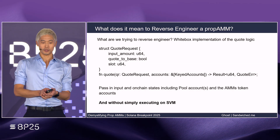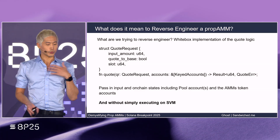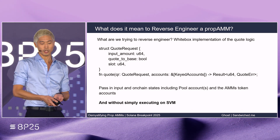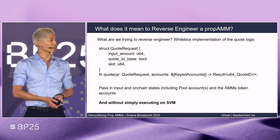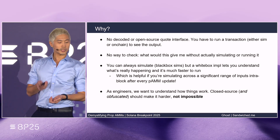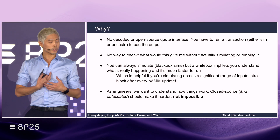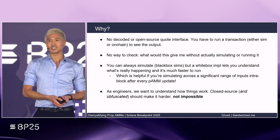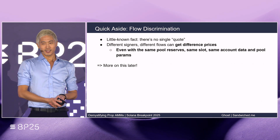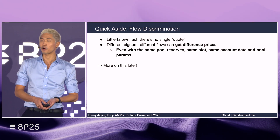For a given Prop AM, we want to build a quote function that takes input, direction, and relevant accounts, and then derive the output amounts as you would get if you swapped on-chain. We don't want to run an SVM simulation to get the answer — the goal is to create a readable Rust port of the swapping logic. Prop AMs don't provide a decoded or open quote interface. To see the output at any given time, you'd have to swap or run simulation, but we don't want that — it doesn't reveal the how. One important gotcha: there isn't a universal quote. Different signers and transaction composition can actually lead to different outputs.